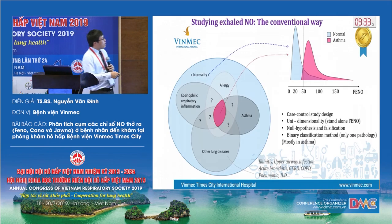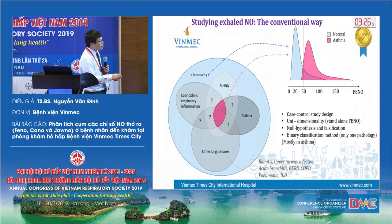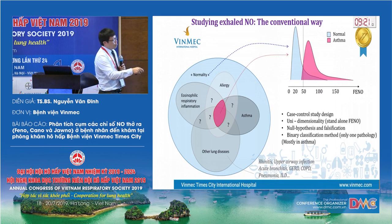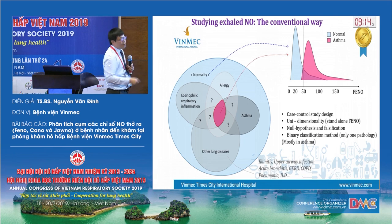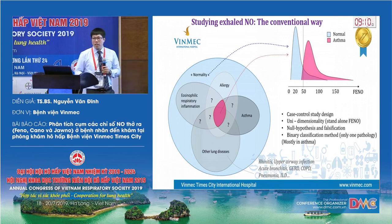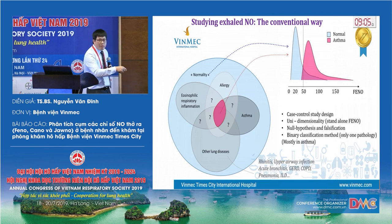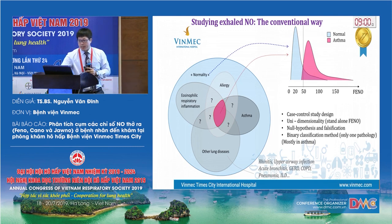Normally in a case-control study, we compare normal patients with asthma patients, so it's very clear. We can see here the FeNO result: in the patient with asthma, very clearly with a high FeNO, but in the normal patient, we have a low FeNO. But in the real world, it's not like that — we have a question about the overlap area here. That's the reason why we carried out this study.